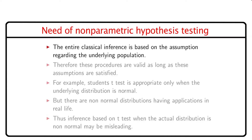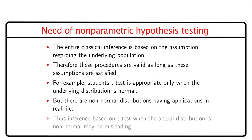We start with the need of non-parametric hypothesis testing. The entire classical inference is based on assumptions regarding the underlying population. Hence, these procedures are valid as long as these assumptions are satisfied. For example, Student's t-test is appropriate only when the underlying distribution is normal. But there are non-normal distributions having applications in real life. Therefore, inference based on t-test when the actual distribution is non-normal may be misleading.